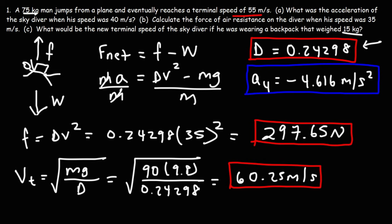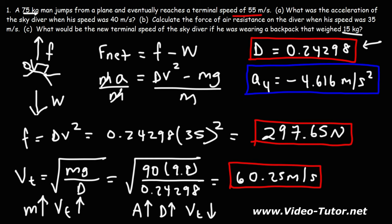So when dealing with terminal velocity, there are two key factors that can affect it. First, if you increase the mass while keeping everything else the same, the terminal speed increases. Second, if you increase the projected area — for example, by employing a parachute — this increases the proportionality constant D, which decreases the terminal velocity. Those are the two things you can adjust for objects in free fall to either increase or decrease the terminal velocity.